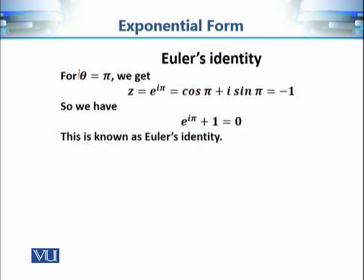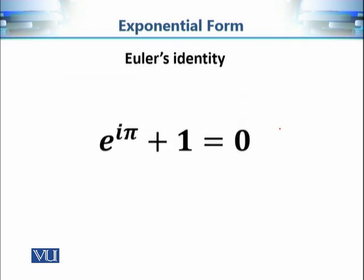Since theta equals pi gives z equal to minus 1, we can rearrange to write: e raised to power iota pi plus 1 is equal to zero. This is known as Euler's Identity. Euler's Identity is one of the most fascinating identities in mathematics, since it involves many important mathematical constants.